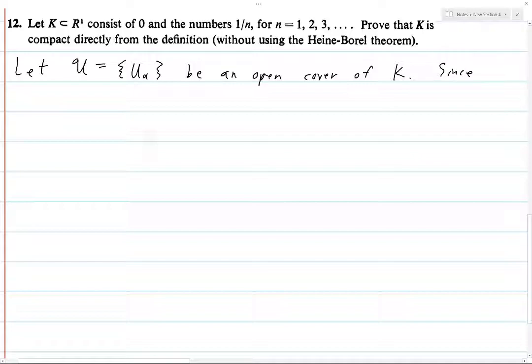Since 0 is contained in K, there exists some, we'll call it Uj, in U, which contains the point 0.